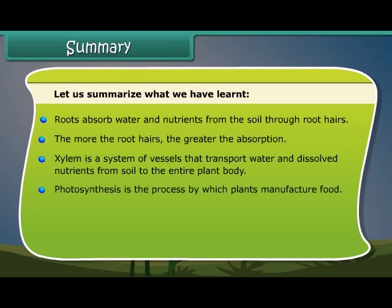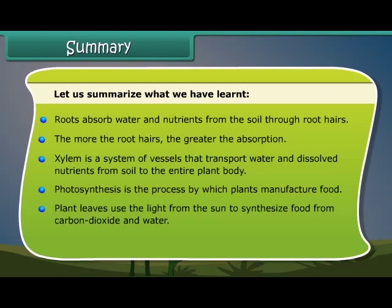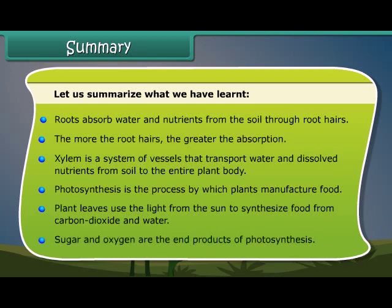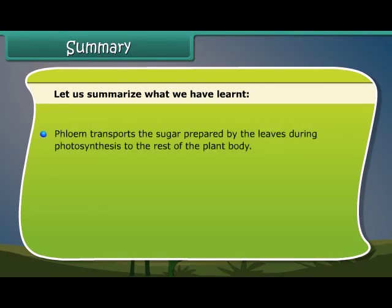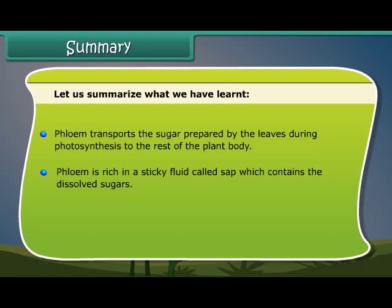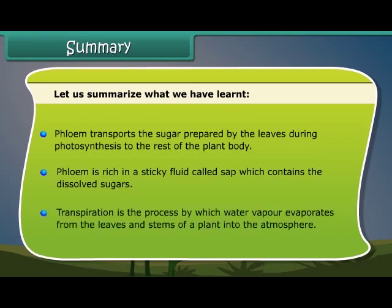Photosynthesis is the process by which plants manufacture food. Plant leaves use the light from the sun to synthesize food from carbon dioxide and water. Sugar and oxygen are the end products of photosynthesis. Phloem transports the sugar prepared by the leaves during photosynthesis to the rest of the plant body, and is rich in a sticky fluid called sap which contains dissolved sugars. Transpiration is the process by which water vapor evaporates from the leaves and stems of a plant into the atmosphere.